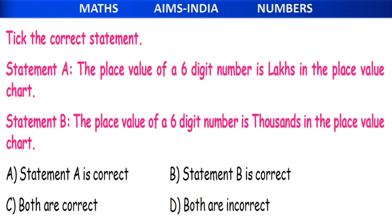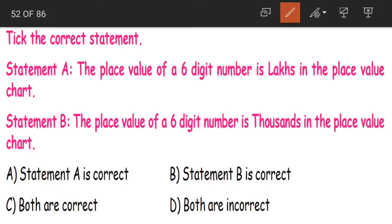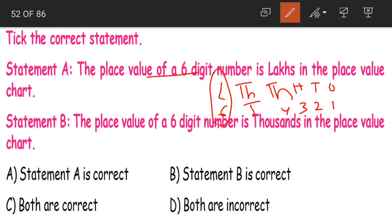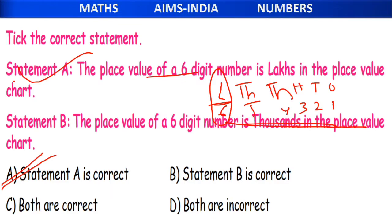Next, tick the correct statement. Statement A: the place value of a 6-digit number is 'lakhs' in the place value chart. Statement B: the place value of a 6-digit number is 'thousands' in the place value chart. Counting the digits — 1, 2, 3, 4, 5, 6 — the place value of a 6-digit number is lakhs. So Statement A is correct, that is option A. It is not the thousands place.